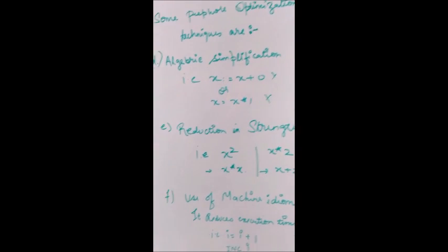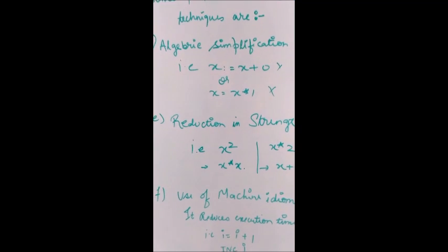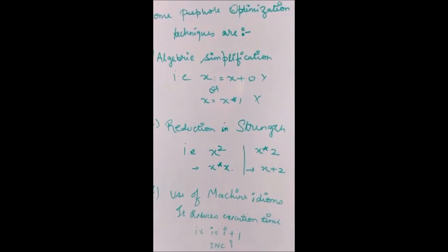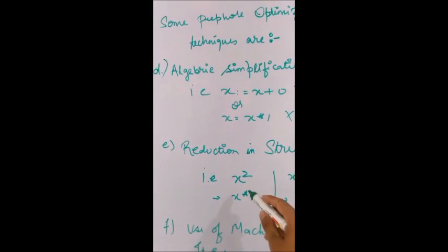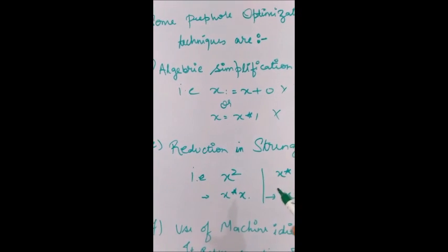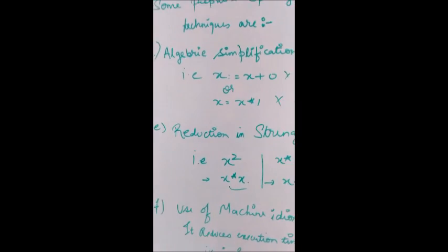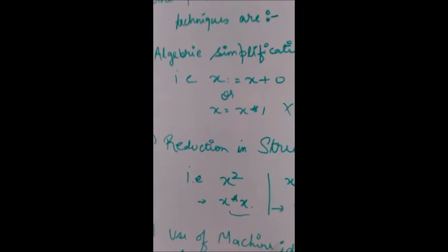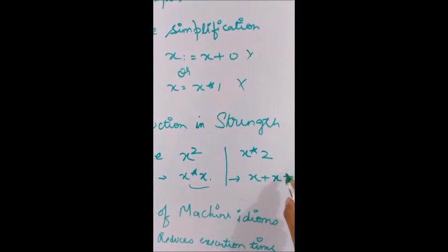The next technique is reduction in strength. Some instructions can be simplified — for instance, x squared can be reduced in strength by replacing it with a multiplication of two variables. Similarly, 'x * 2' can be replaced with 'x + x', which is a much cheaper instruction.